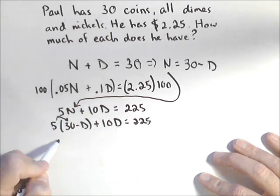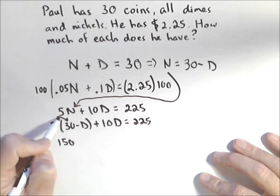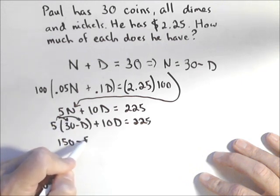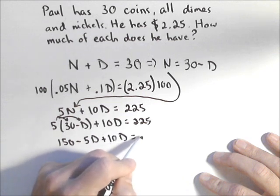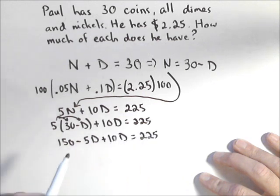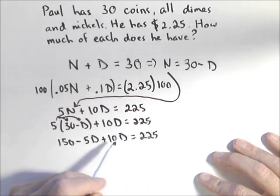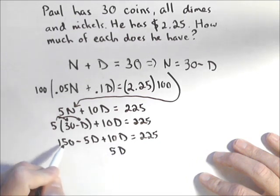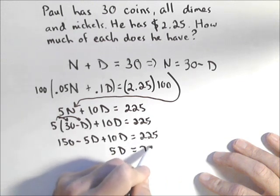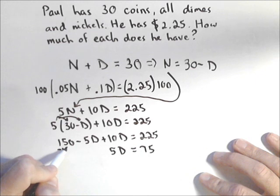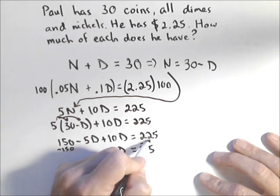I'm going to distribute the 5. So your parentheses are important during substitution. 150 minus 5D plus 10D equals 225. Negative 5D plus 10D leaves me with just 5D over here. I'm going to subtract 150 off of each side. So subtracting 150 from 225 leaves me 75.